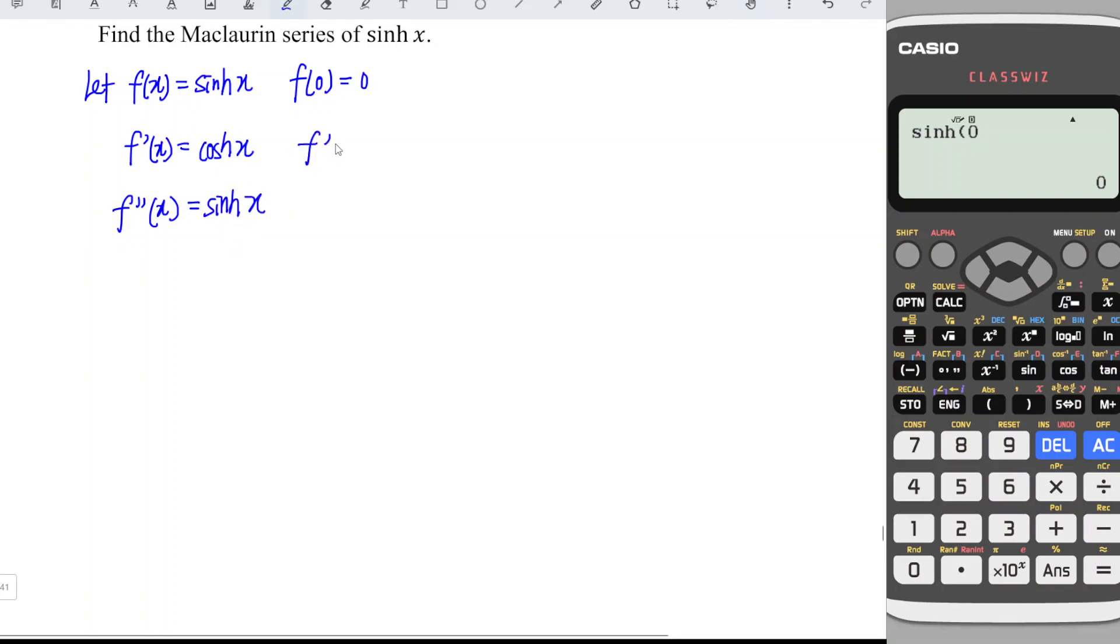So for hyperbolic cosine function as x equals 0, we have option again, look for hyperbolic. Now we should look for cos 0. So we have 1. So it's supposed to have 0, 1, 0, and so on.